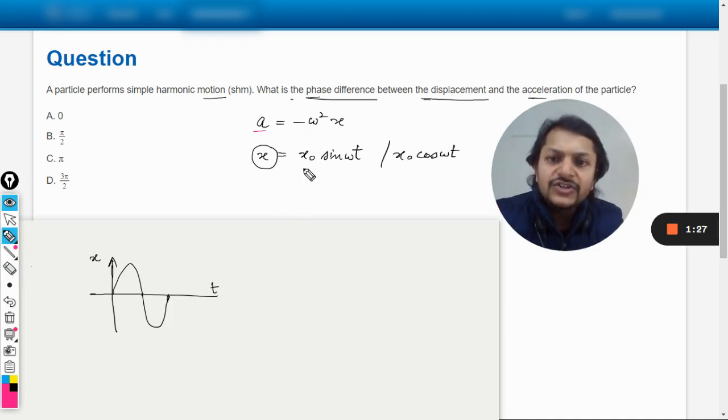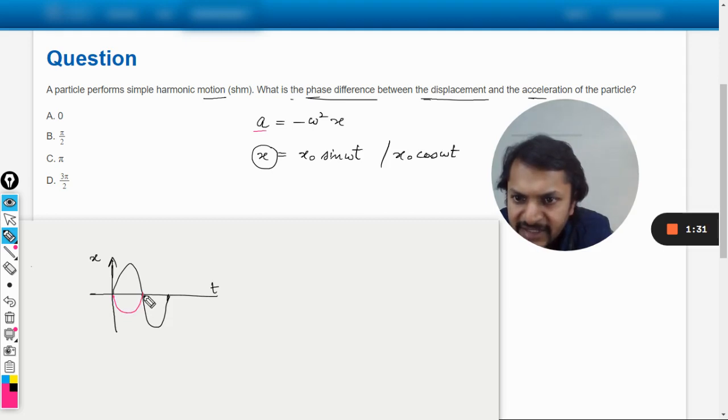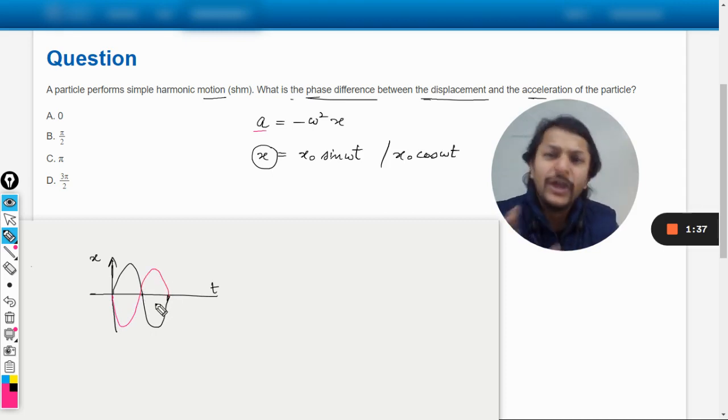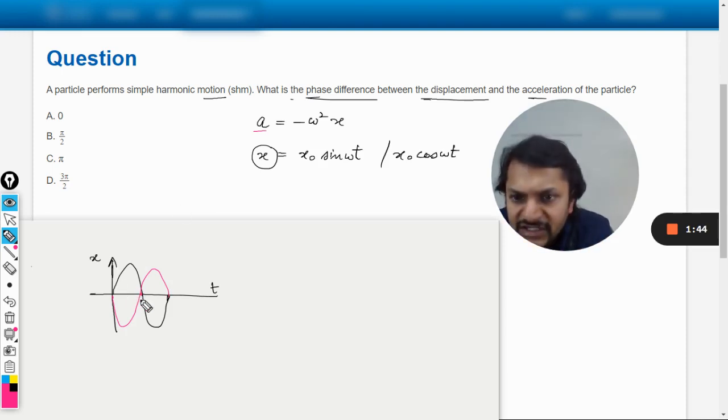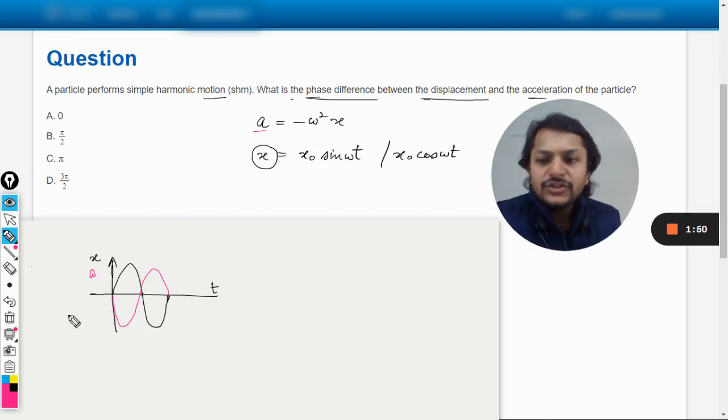I can say that acceleration will be having a different magnitude, but definitely it is negative X. So negative sine theta will be somewhat like this with a different magnitude which will be more than this. Anyways, but I'm not drawing like that. Please don't go from that point of view. The only thing is that I'm just saying how the graph will look like.